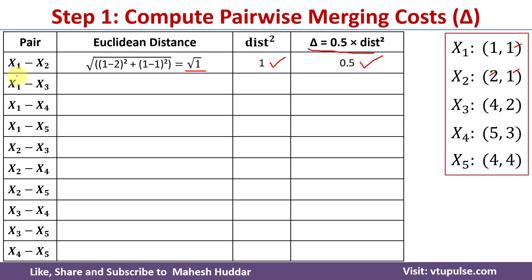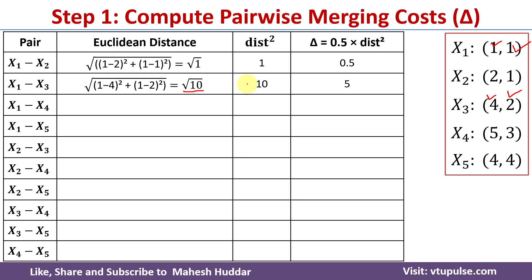Similarly, for x1 and x3, the Euclidean distance is the square root of (1−4)² + (1−2)², which equals square root of 10. The distance squared is 10, and delta equals 0.5 times 10, which equals 5. Similarly, we need to find the merging cost for all the pairs.